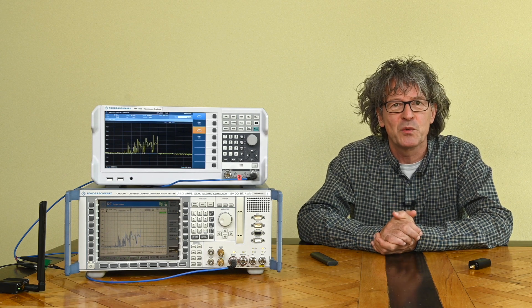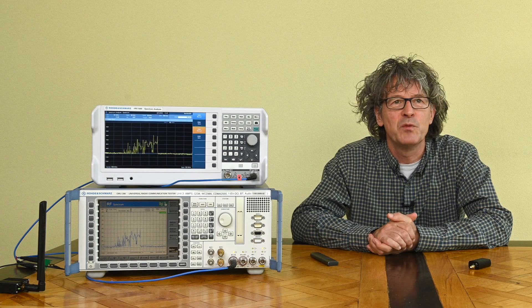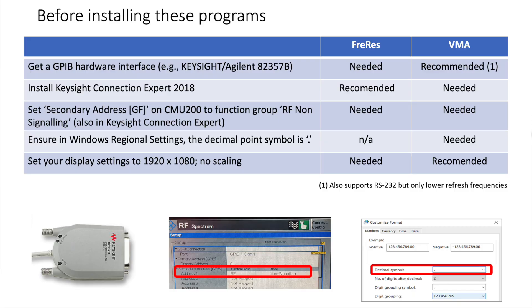Here are my advices if you want to run any of these programs. First, do get a GPIB hardware interface. FreeRes needs that — no question. VMA can also run via serial port RS232, but then it cannot achieve the high refresh rate possible with GPIB. I would get a GPIB interface. They used to be very expensive, but nowadays on eBay you can buy the Keysight GPIB interface for about 100 euros, which is a decent investment.